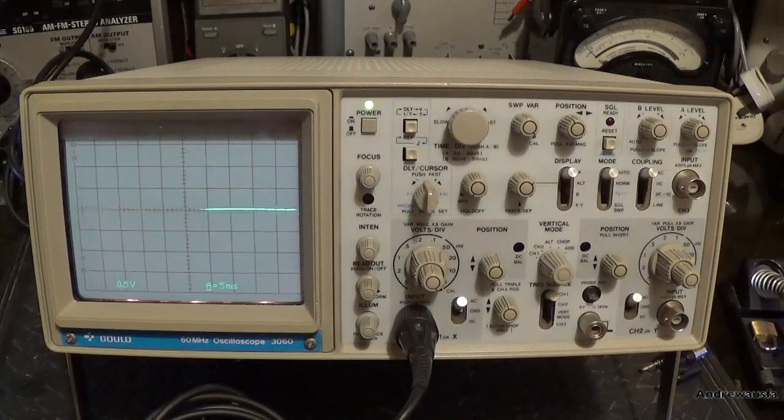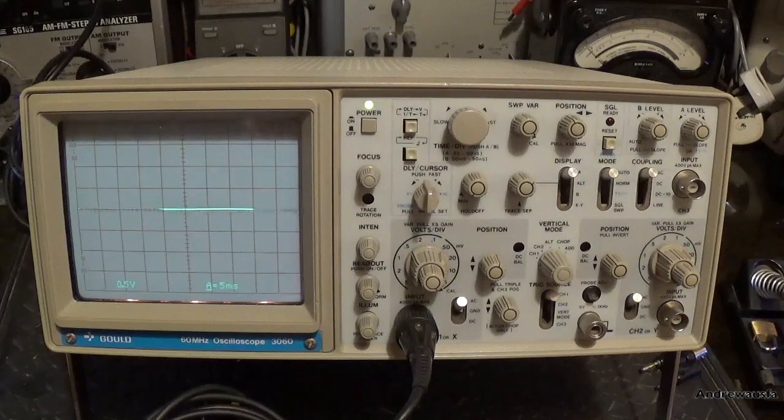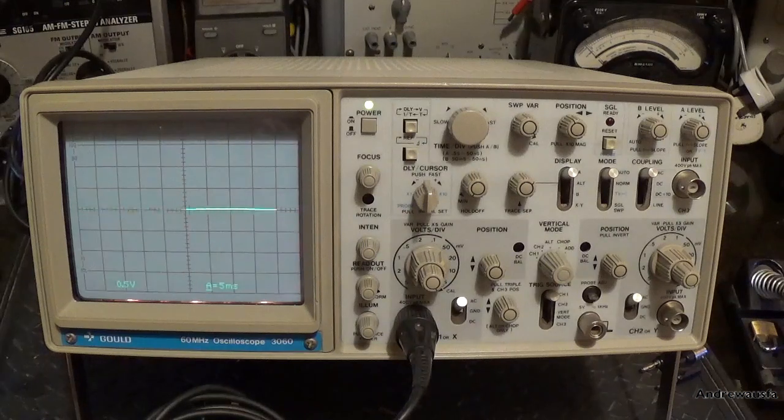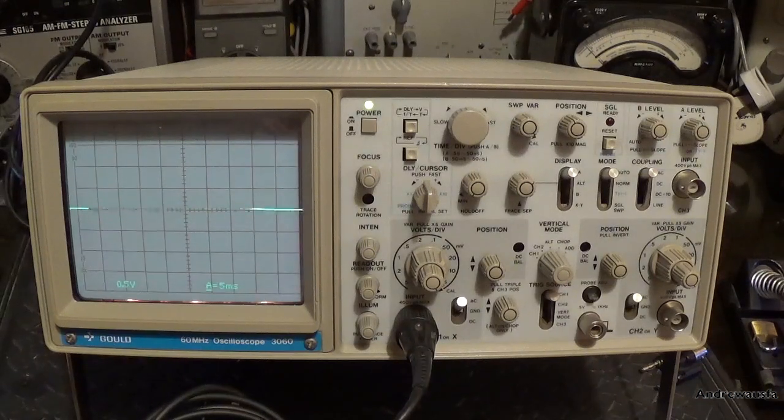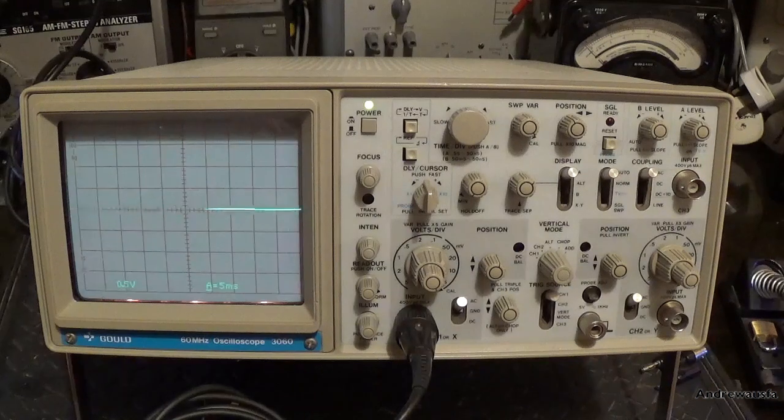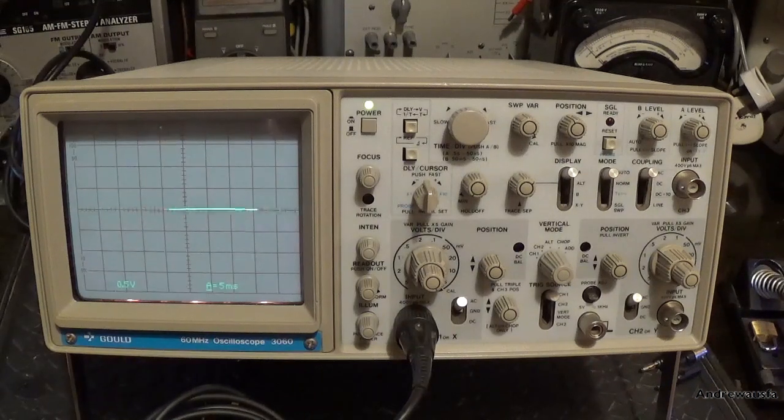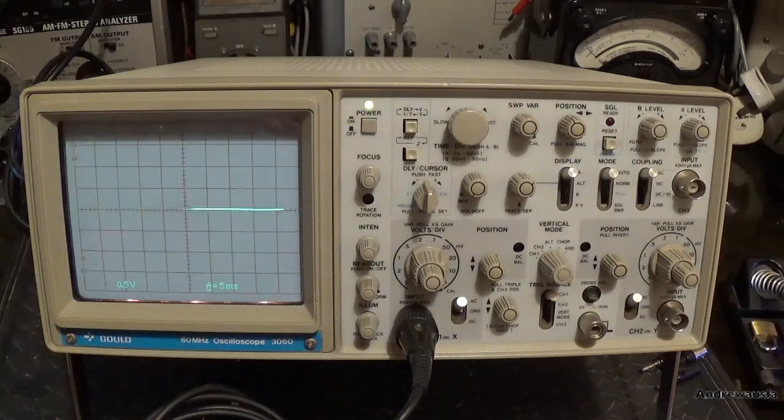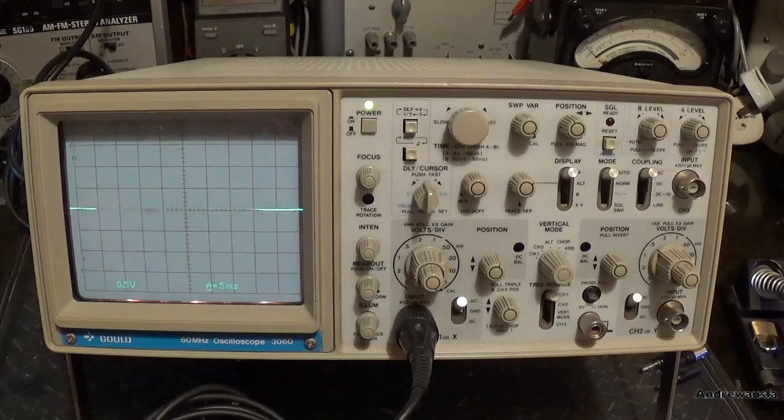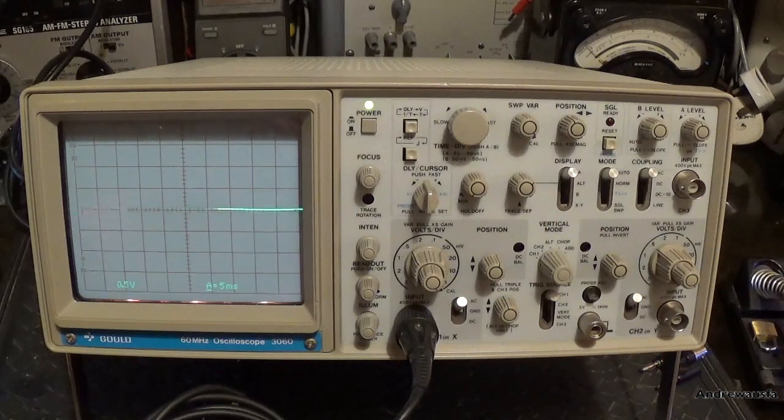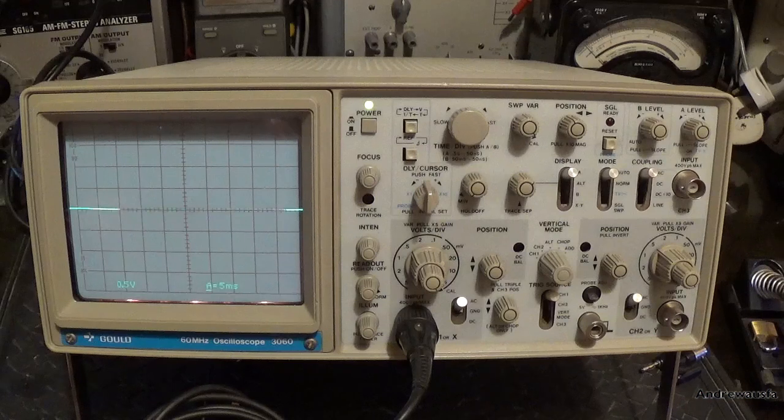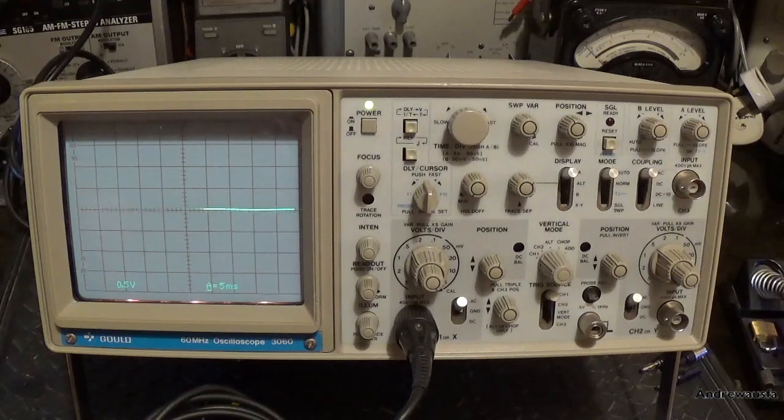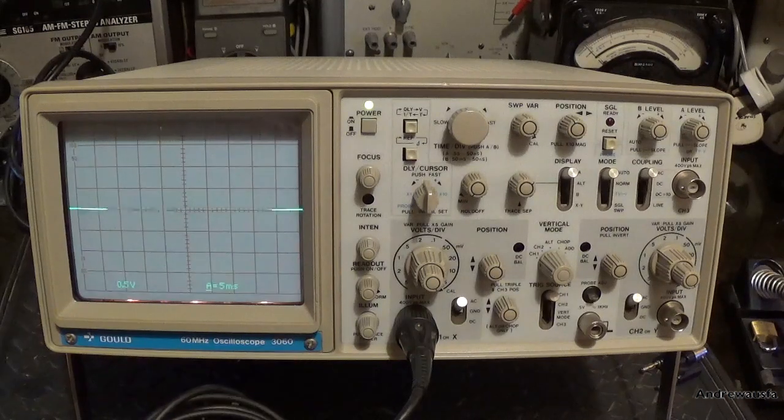This is a Gould 60 megahertz oscilloscope with a model number of 3060, and what it actually is is a Hitachi 680F. It took me ages - I was searching for Gould 3060 and then I saw a post from someone else on an electronics forum saying that Gould had rebadged Hitachi gear. I quickly looked through all the Hitachi oscilloscopes and found that this was a 680F.